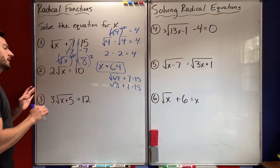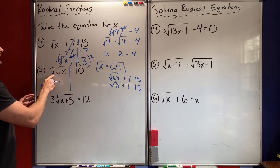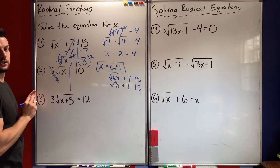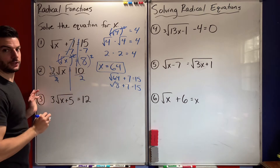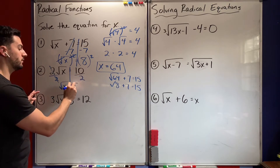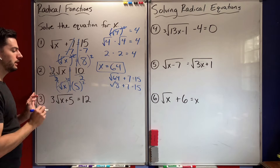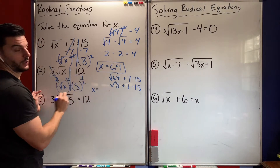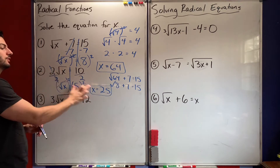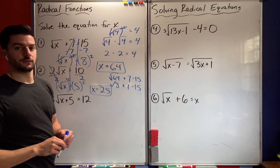Looking at number 2 — same idea. This says 2 times the square root of x equals 10. I don't want to square it right away; I want to get the square root by itself. So I divide both sides by 2 and get the square root of x equals 5. Then I square both sides to cancel the square root, and x equals 5 squared, which is 25. To check: 2 times the square root of 25 — the square root of 25 is 5, so 2 times 5 equals 10. It checks out.